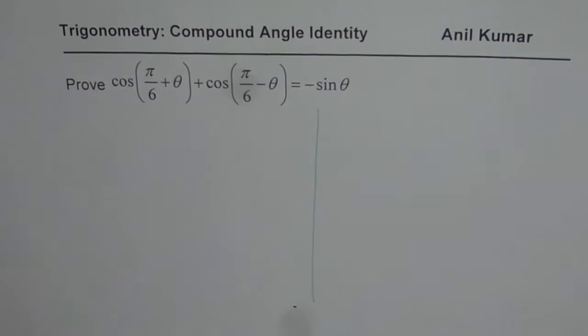The identity to be proven is cos of pi by 6 plus theta plus cos of pi by 6 minus theta equals minus sine theta.